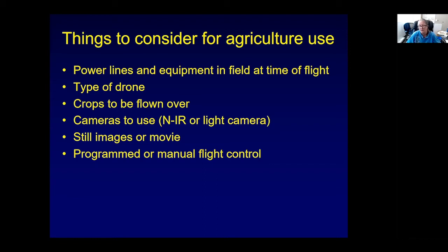Some drones, when the battery runs low, will just land straight down wherever they are — if they're above a tree, they land in the tree; if above a power line, they land on it. It's important to know what your drone would do with programmed flight. I've heard from growers where a drone hit a house wall and was damaged beyond repair, and someone else flew over an orchard and the drone just vanished — they never found it.